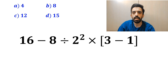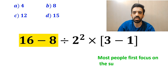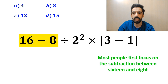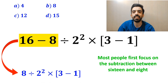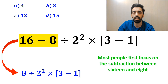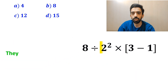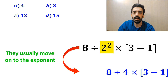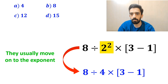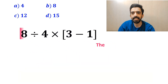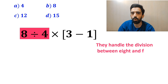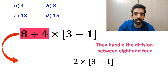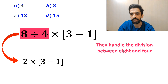To solve this question, most people first focus on the subtraction between 16 and 8, and they rewrite the whole expression as 8 divided by 2 squared multiplied by 3 minus 1 inside the brackets. Next, they usually move on to the exponent and rewrite this expression as 8 divided by 4 multiplied by 3 minus 1 inside the brackets. Then, they handle the division between 8 and 4, and replace this expression with 2 multiplied by 3 minus 1 inside the brackets.